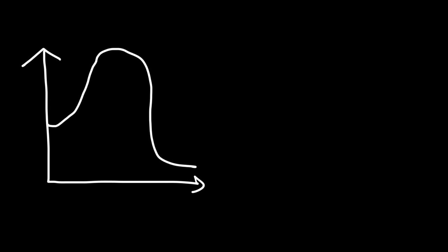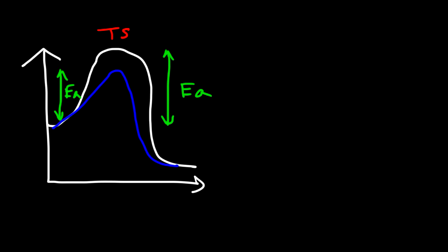If you draw an energy diagram, here is the original energy profile with the transition state. If you stabilize the transition state, you lower its activation energy, so less energy is required to get the reaction started. That's how the SN1 reaction works better in a polar protic solvent: the polar protic solvent, like water or methanol, can stabilize the carbocation intermediate and the bromide ion that forms, and it can also stabilize the transition state.